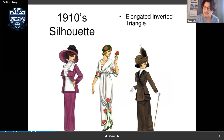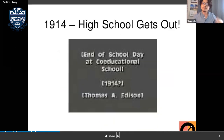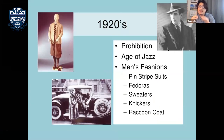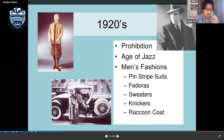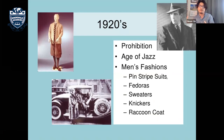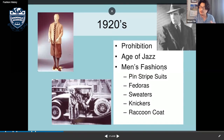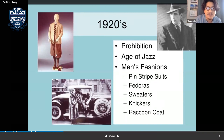In the 1920s — the prohibition and age of jazz era — men's fashion became more distinctive. Suits had more interesting details including pinstripes, fedora hats, sweaters, and knickers. Knickers are short pants that fall just over the knee length — not as short as shorts.